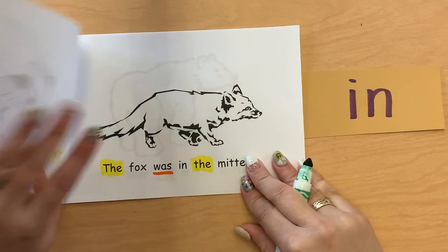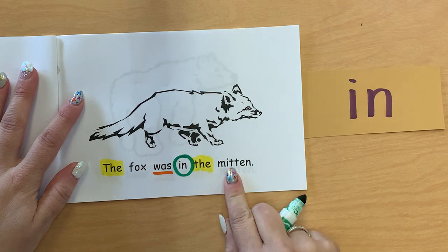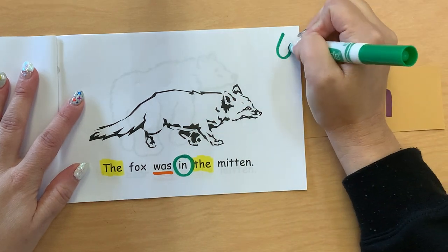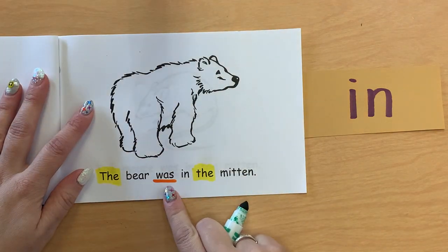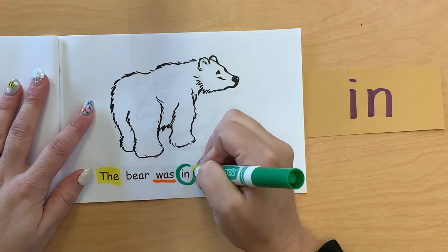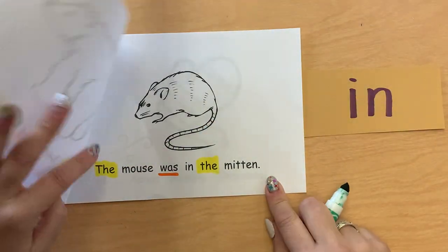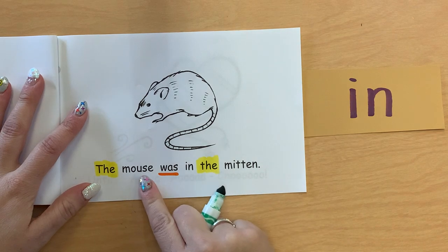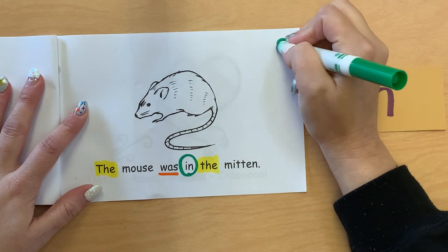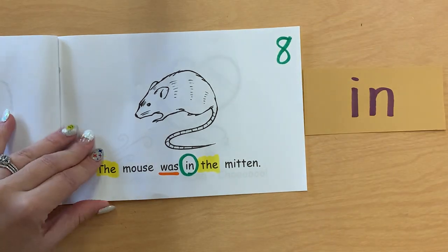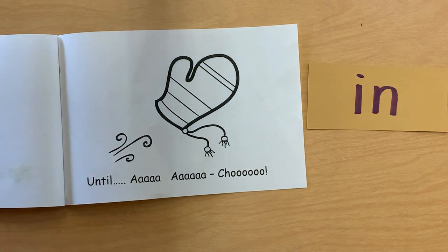Who's next? The Fox was in the Mitten — this is number six. Six animals. The Bear was in the Mitten — number seven. The Mouse was in the Mitten — this is number eight. There were eight animals in the Mitten. Until... Ah-a-choo! It exploded.